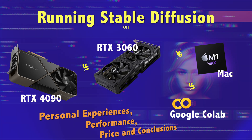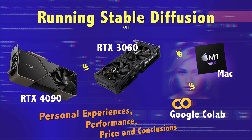A few weeks ago I decided that I need a more powerful machine in order to finish some larger projects, so I decided to buy another PC with an RTX 4090, which hopefully would give me enough computing power to do what I intended to do. And there's also Google Colab, which I've been using for some demanding tasks, for example doing some Dreambooth trainings for my own Stable Diffusion models.